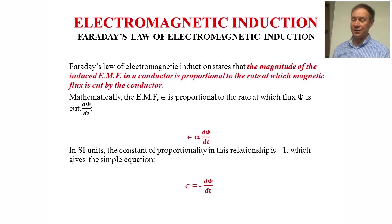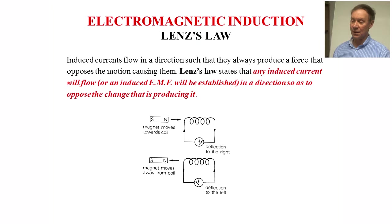Faraday's law of electromagnetic induction states that the magnitude of the induced EMF in a conductor is proportional to the rate at which magnetic flux is cut by the conductor. Mathematically, E is proportional to d psi by dt. In SI units, the constant of proportionality in this relationship is minus one, which gives the simple equation E equals minus d psi by dt.